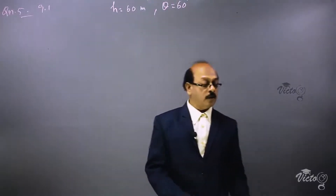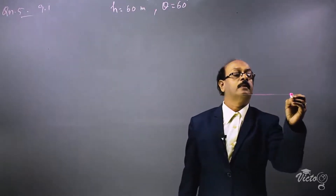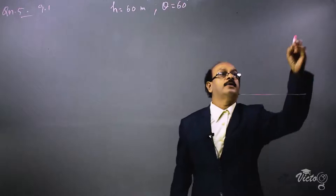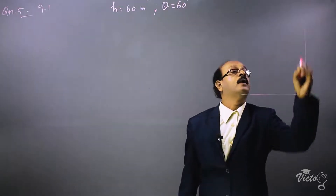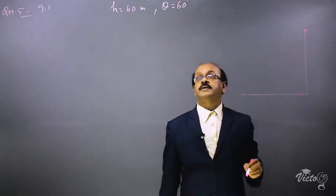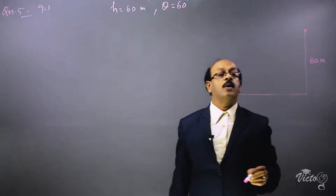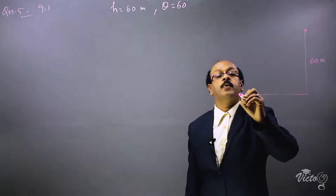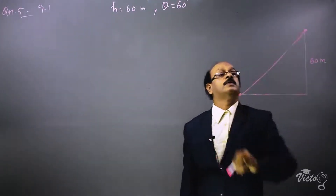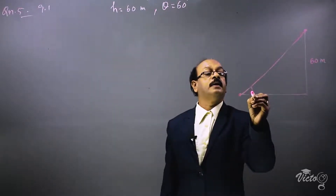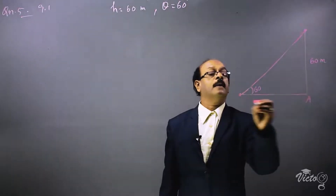Drawing a rough figure: let this be the level ground. Here is the kite, and the height is given to be 60 meters. A string is tied to a point on the ground, making an angle of 60 degrees with the ground. Naming the triangle: this is A, B, C.